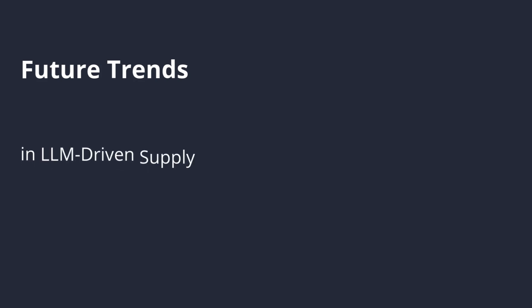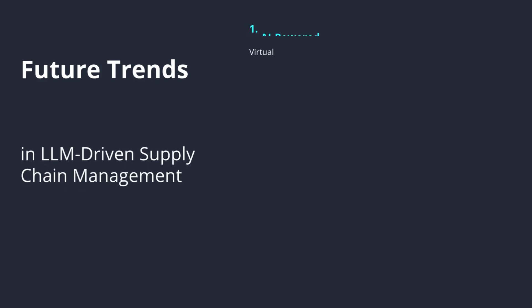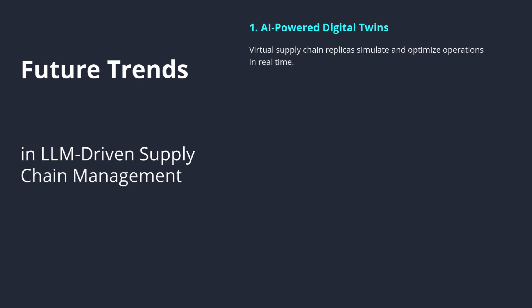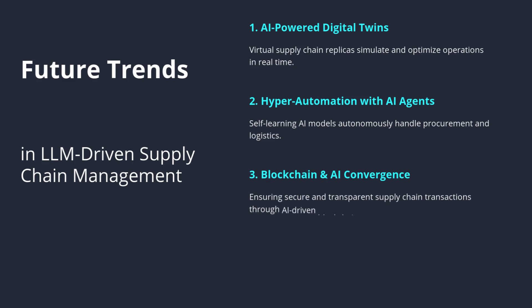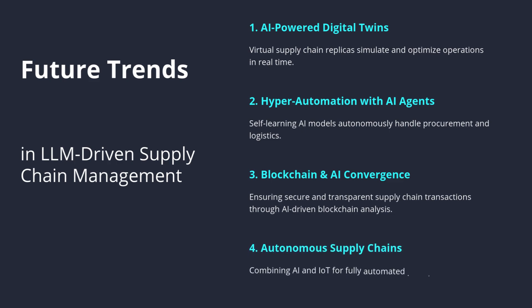Future trends in LLM-driven supply chain management. One: AI-powered digital twins — virtual supply chain replicas that simulate and optimize operations in real-time. Two: hyper-automation with AI agents — self-learning AI models that autonomously handle procurement and logistics. Three: blockchain and AI convergence — ensuring secure and transparent supply chain transactions through AI-driven blockchain analysis. Four: autonomous supply chains — combining AI and IoT for fully automated inventory management and logistics.